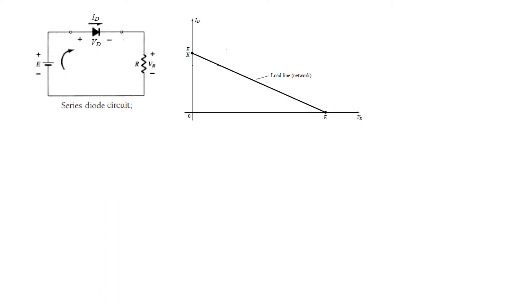This is the circuit. We have a diode and a resistor and supply voltage. We can write the KVL equation: minus E plus Vd plus Vr equals 0. And therefore E is Vd plus Vr. Vr we can write IdR because the Id current is flowing through this. So Vr is IdR.